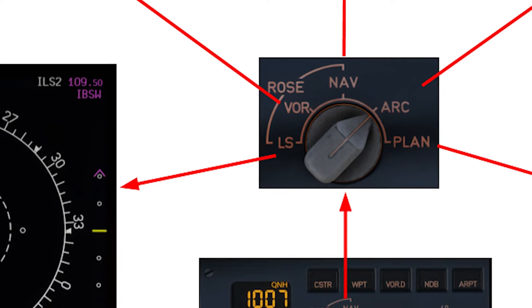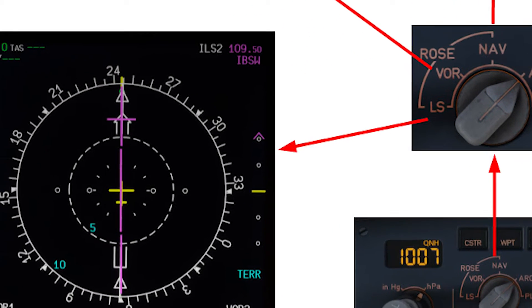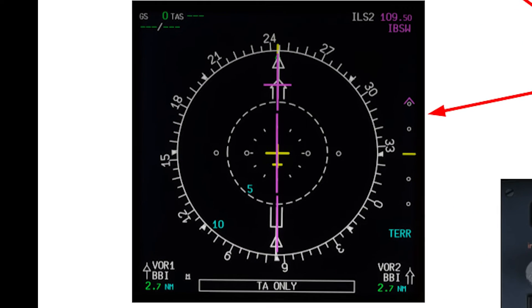When you select the rose LS mode, the following NAV display depiction will appear. It's a top-down HSI view where in the middle you have the aircraft symbol. You have the localizer indication with left and right deflection if you are not on the center, and on the right-hand side you can see the glide slope scale showing if you are on center, above, or below the glide slope. In the top right corner you'll have the ILS frequency and the ILS identifier as soon as the ILS has been automatically identified by the system.